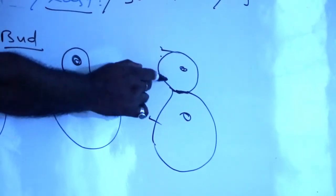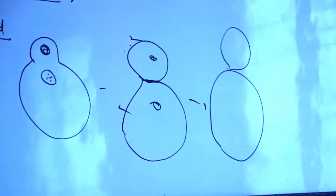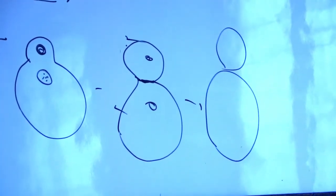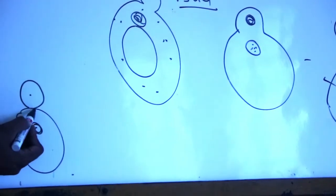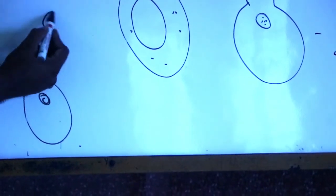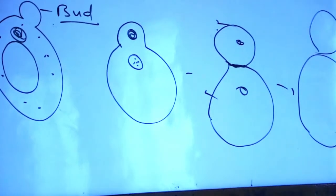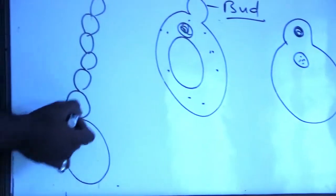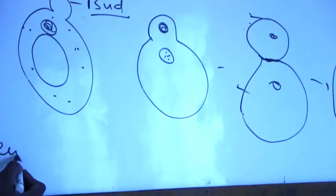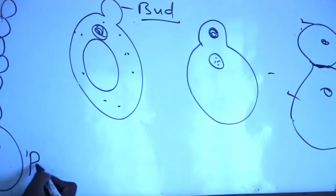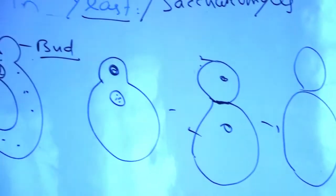Sometimes the daughter yeast separates from the parent yeast and independently lives its life. But in some cases, after formation of new yeast by budding, the new yeast remains attached to the parent body and further reproduces by the budding method. This process repeats again and again, resulting in a number of yeast cells attaching to form a filamentous body called pseudomycelium.